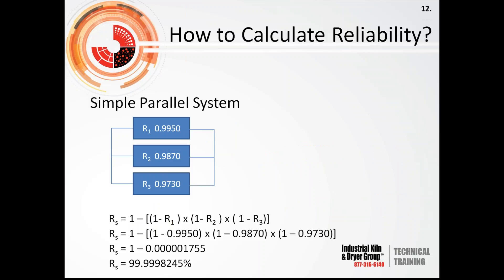In a simple parallel system, you are looking at units that can independently produce the needed output for the next point in the system — they are 100% redundant. Sometimes plants have two units that typically run at varying rates but can each operate independently to provide 100% of the needed output. In a simple parallel system, you need to know these units are completely redundant. The calculation is more complex, and in this case we come up with 99.99% reliability.